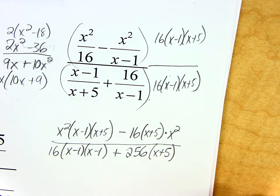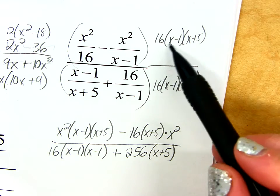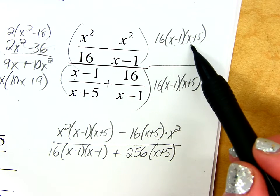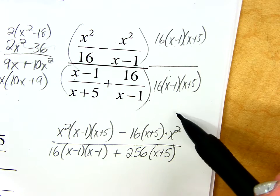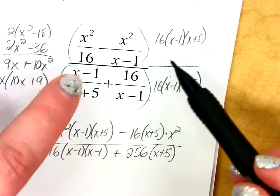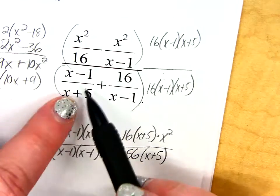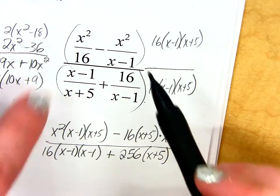So, if you're a little lost, I just want to go over what I've done. Hopefully, everybody's okay with where 16x minus 1x plus 5 came from on top and bottom. That's going to be my common denominator. So, what I've done is basically I need to take this and multiply by both of these. Same thing on the bottom. I need to take that and multiply by both of these.